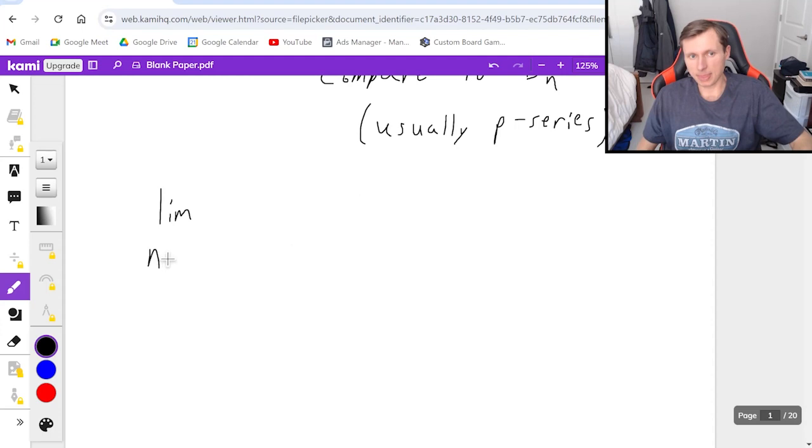And then this is what you do with the limit comparison test. You take the limit as n goes to infinity of the fraction, b sub n over a sub n. Technically, there's supposed to be absolute values here. And it does not matter if the b sub n or the a sub n is on top. In other words, you could also do this if you wanted to, and you'll get the same result.